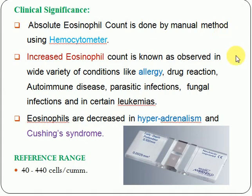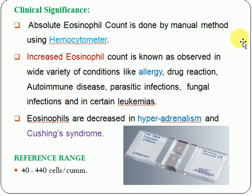We can use the manual method or the automated method. If we are going to use the manual method, then we need to use a hemocytometer. This is the picture of a hemocytometer, also known as a Neubauer chamber. There are some conditions where eosinophils will increase and some where eosinophils will decrease.